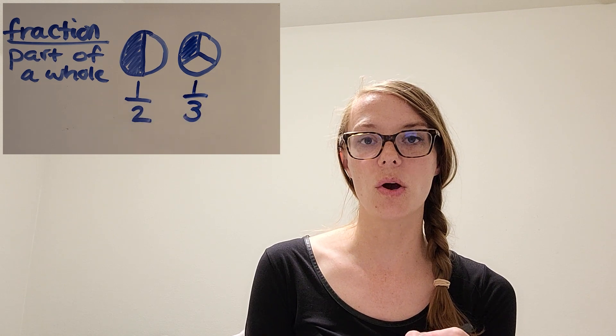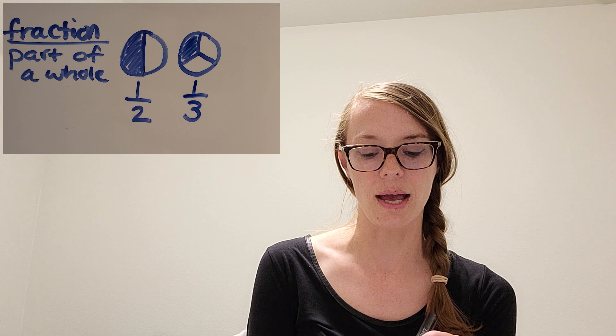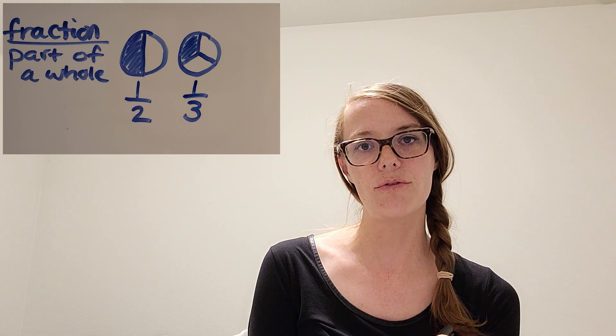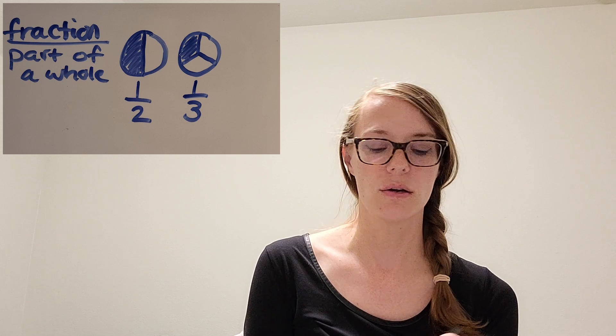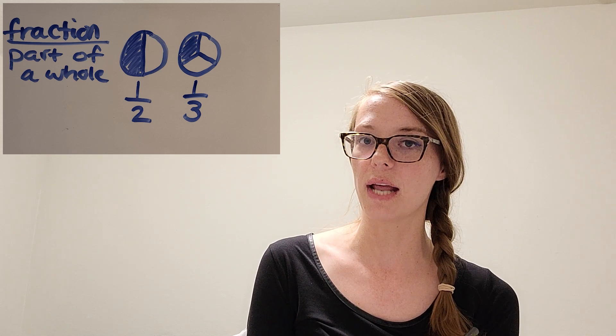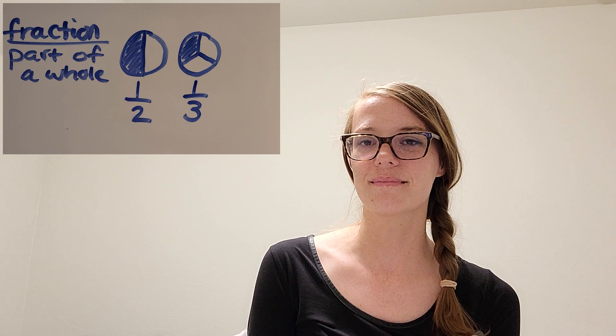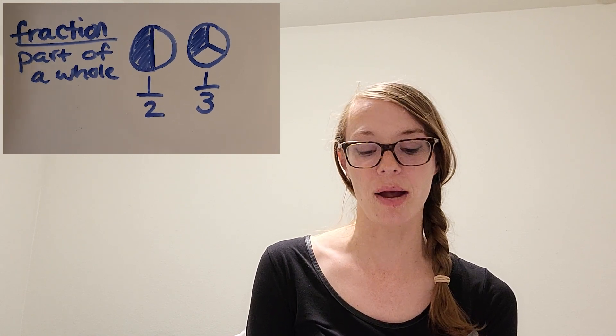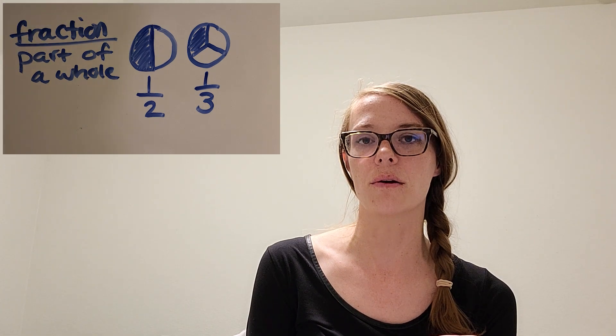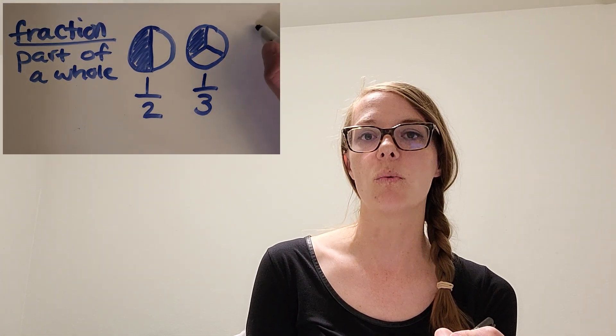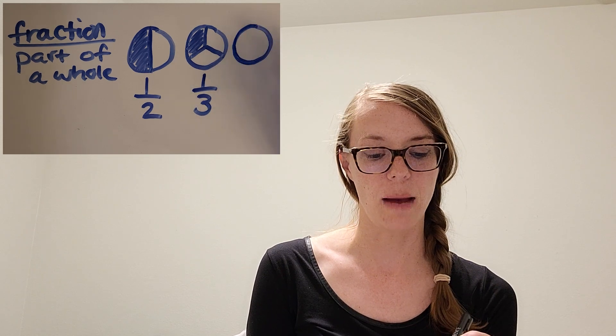And then I'm going to shade in one of those. So what do you notice that happened to the size of those pieces when I went from half of the cookie to one-third of the cookie? What happened to the size of the pieces? You notice that it got smaller, right? One-third looks a little smaller than one-half. Let's see if that keeps going.